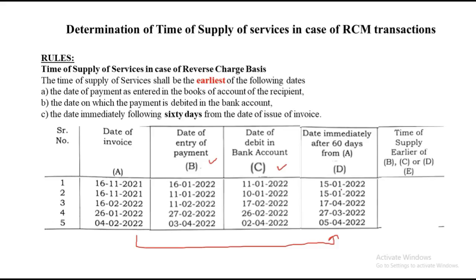Working through the RCM services examples: 16th January, 11th January, and 15th January — earliest is 11th January. Next: 11th January, 10th January, and 15th January — 10th January is the earliest. Next: 11th February, 17th February, and 17th April — 11th February. Next: 27th February, 26th February, and 27th March — 26th February. Last: 3rd April, 2nd April, and 5th April — 2nd April is the earliest. That is how you solve sums based on time of supply for services under RCM.